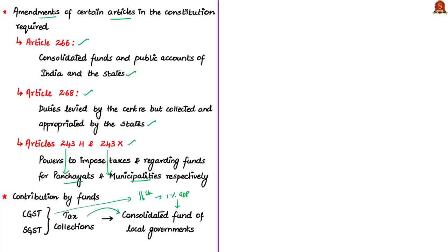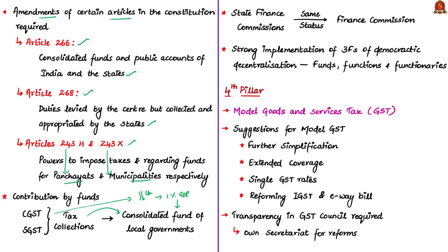To further strengthen decentralization, the authors propose that state finance commissions should be accorded the same status as the Finance Commission. The three F's of democratic decentralization — Funds, Functions, and Functionaries — should be strongly implemented. All these actions would strengthen India's democratic framework.